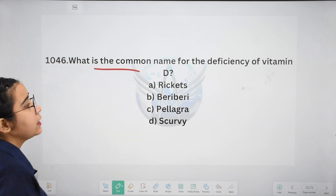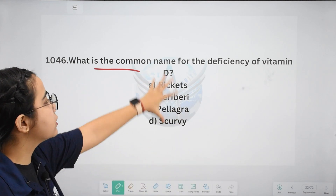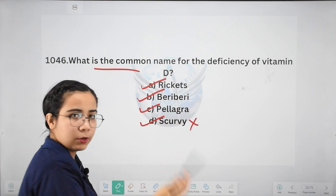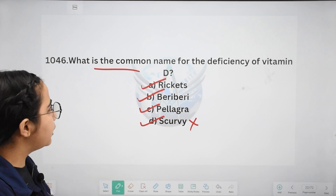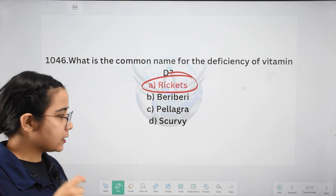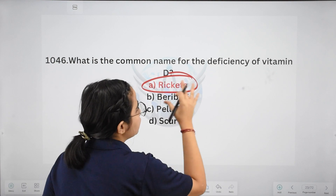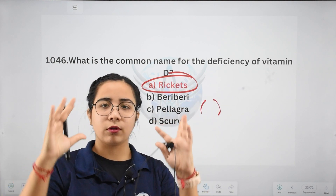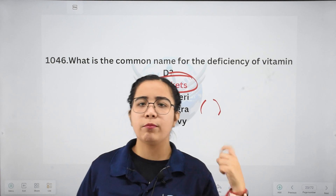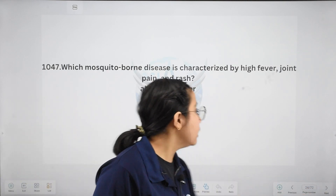Next: what is the common name for the deficiency of Vitamin D? We already know Vitamin C causes scurvy. Options: Rickets, Beriberi, Pellagra, or Scurvy. Since scurvy is Vitamin C, we can eliminate that. The answer is Rickets. Vitamin D's major source is sunlight. Rickets causes legs to become rounded rather than straight, and it is very prevalent in children. Remember: Vitamin D deficiency leads to Rickets.